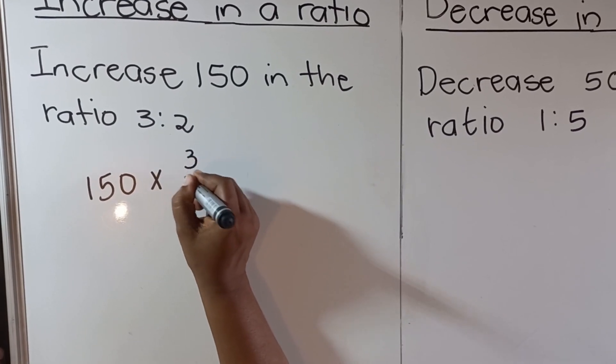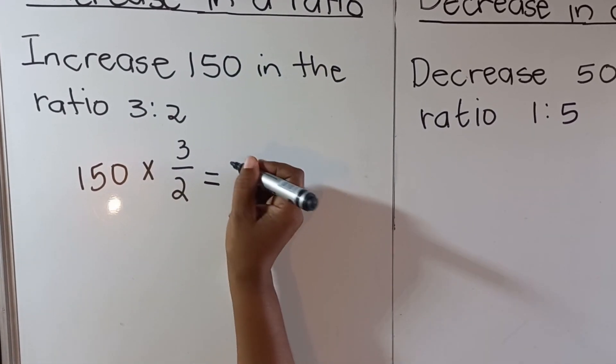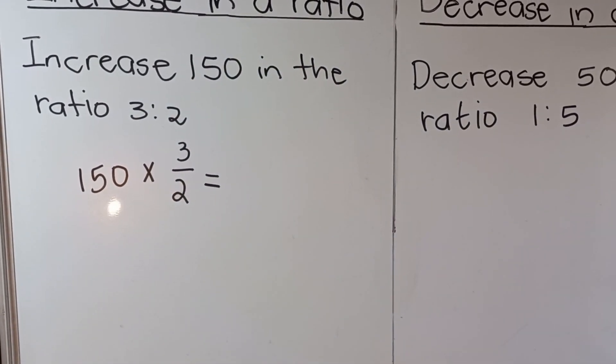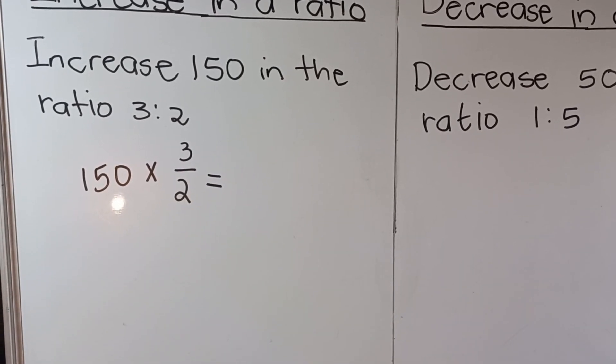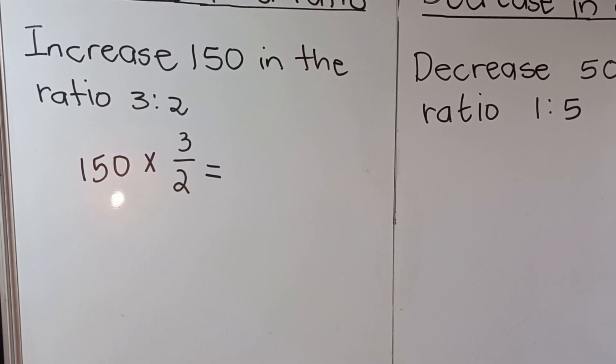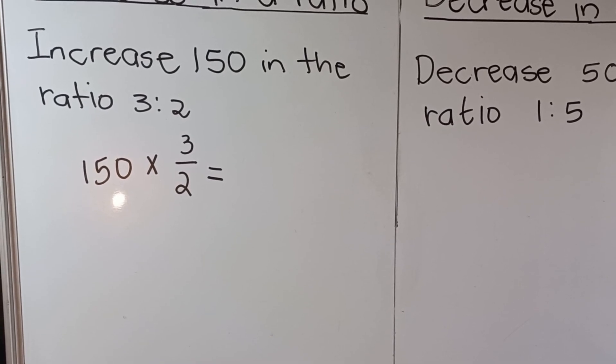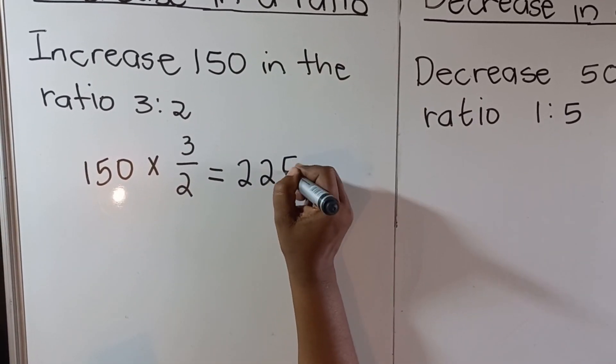Then you put it in your calculator, then you would have increased 150 in a ratio 3 is to 2. So it's 150 multiplied by 3 over 2, so it's 225.